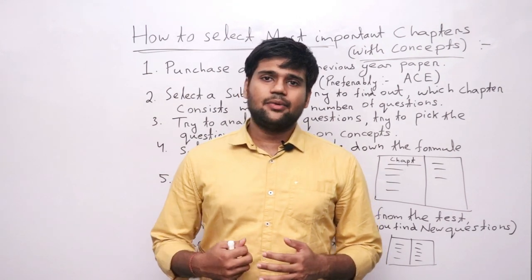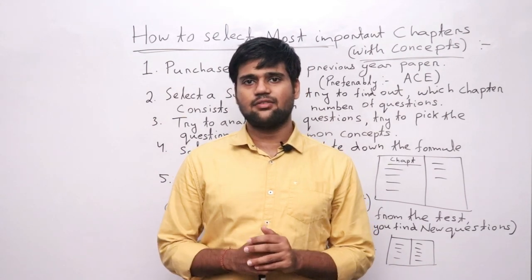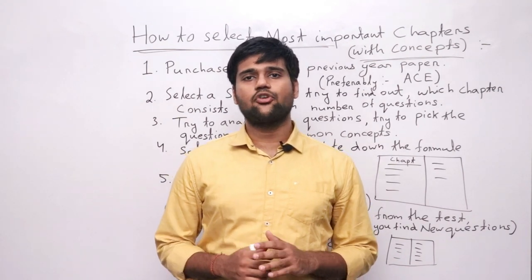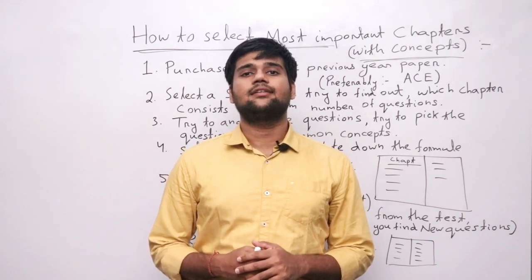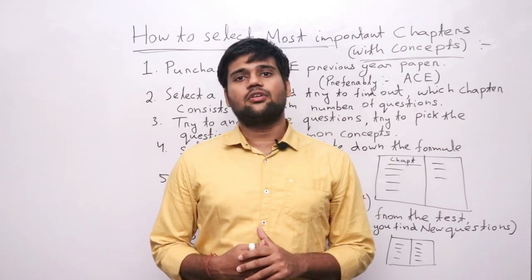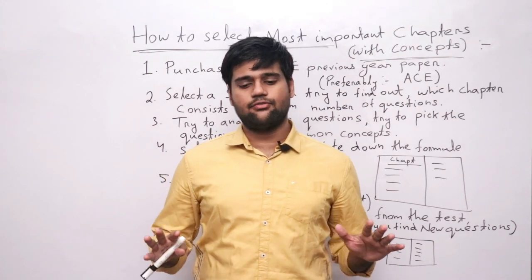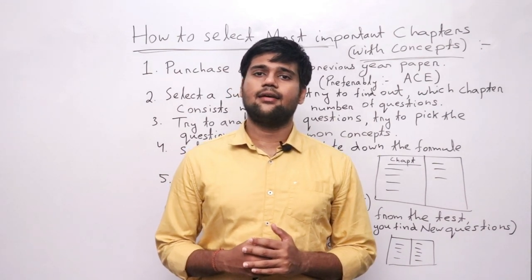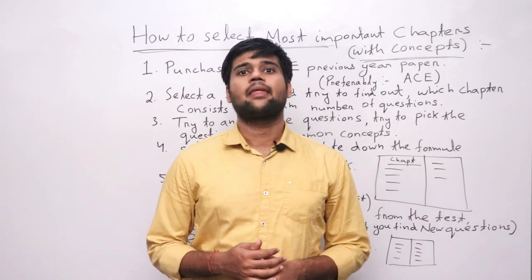The GATE examination has 65 questions and 100 marks. Out of 65 questions, 10 questions will be from aptitude and English. So if you subtract 65 minus 10, there are 55 questions remaining. For those 10 aptitude and English questions, you have to cover everything.